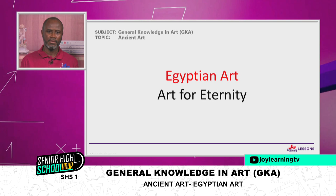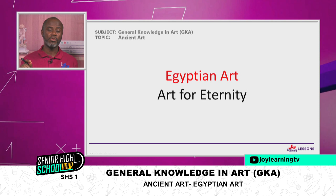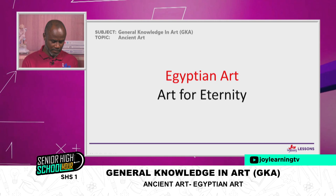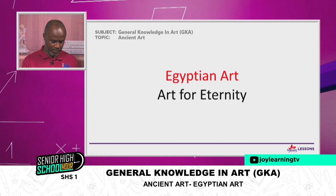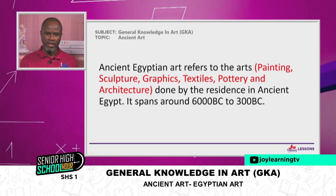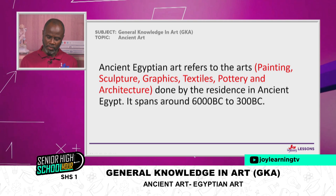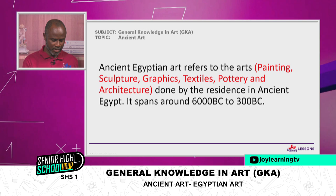Let's look into Egyptian art — by Egyptian art, I mean ancient Egyptian art. It is also referred to as art for eternity. By the end of this lesson, you should be able to explain why we refer to ancient Egyptian art as art for eternity. Ancient Egyptian art refers to the arts — painting, sculpture, graphics, poetry, and architecture — done by the residents of ancient Egypt, spanning from 6,000 BC to around 300 BC.